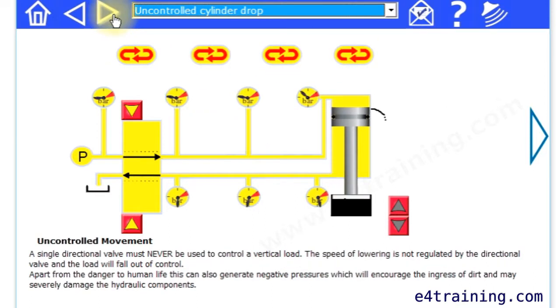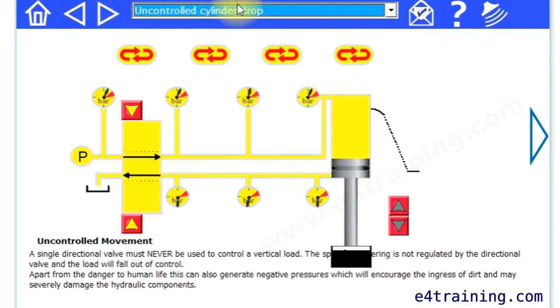The thing to do is to work through this section at the top of the drop-down and it gives you the instructions of what you should be looking for. Here we've got an uncontrolled movement - this is what we don't want to do. We've got a vertical load held by just a directional valve so it crashes to the floor instantly. That's not a good condition.